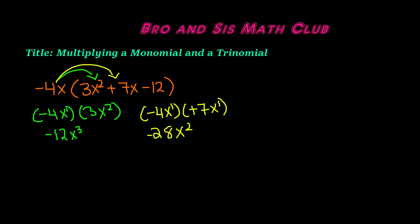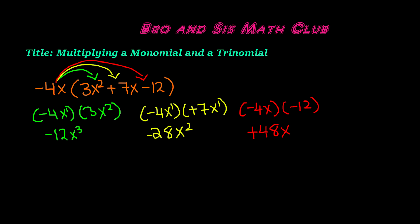Now let's distribute negative 4x to negative 12. Negative 4 times negative 12 gives you positive 48, because a negative times a negative is always a positive. And we keep our x, because our second term, negative 12, is a constant — a real number with no variable. So negative 4x times negative 12 gives us positive 48x.